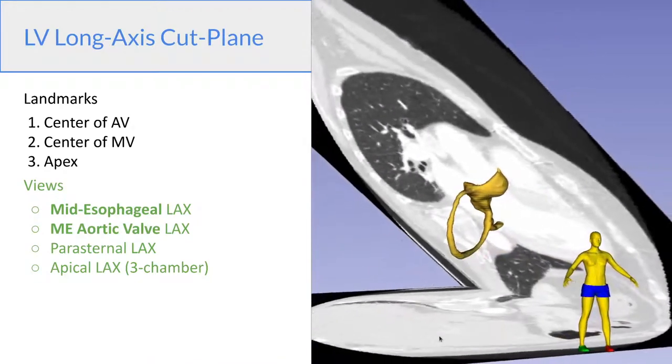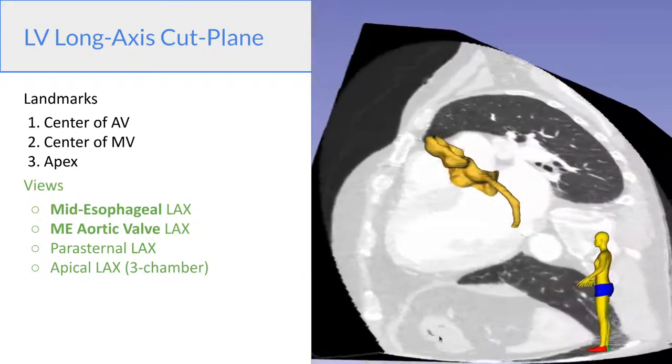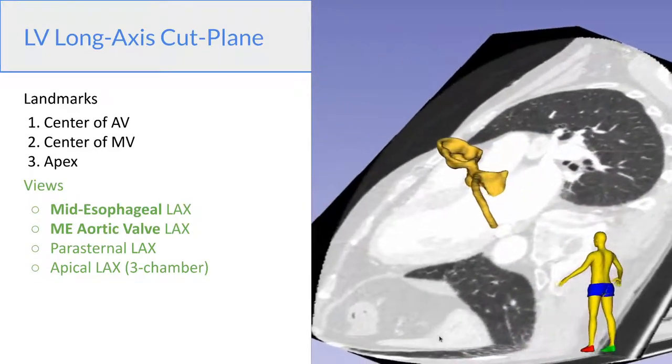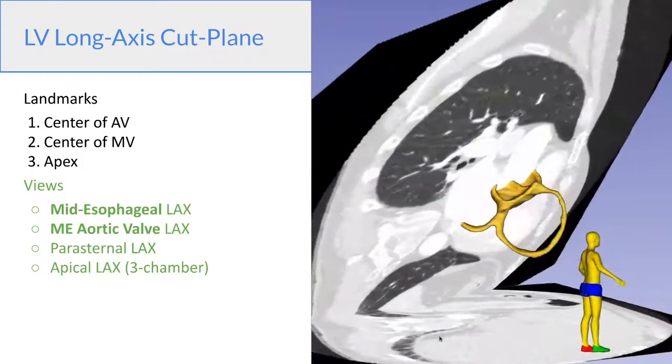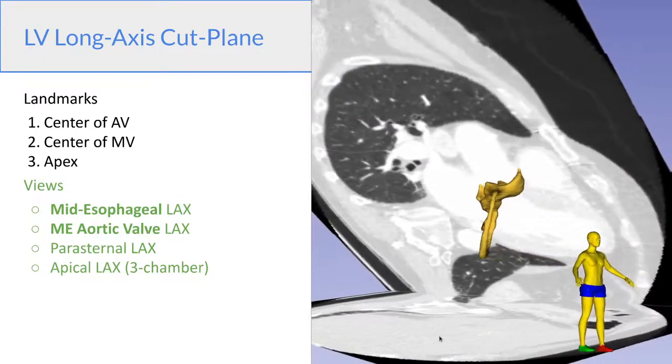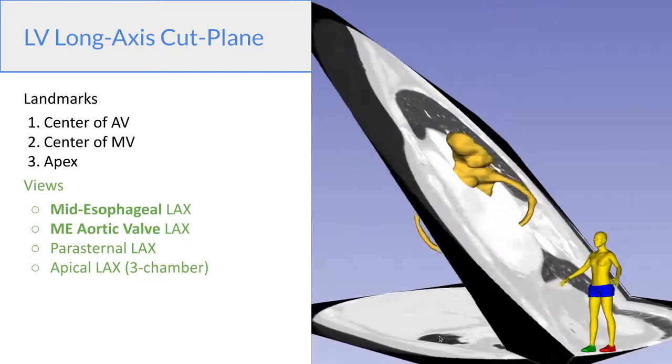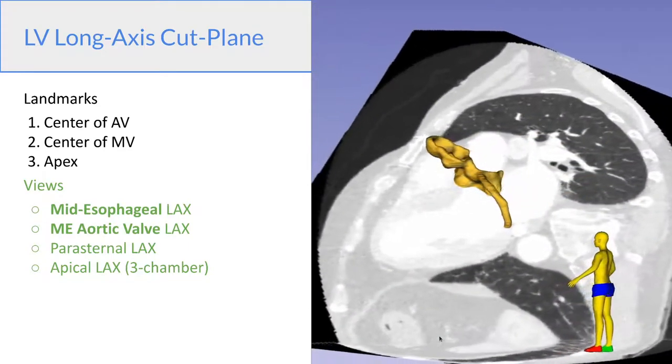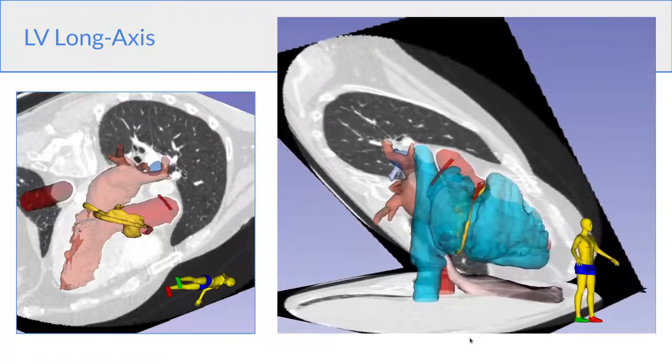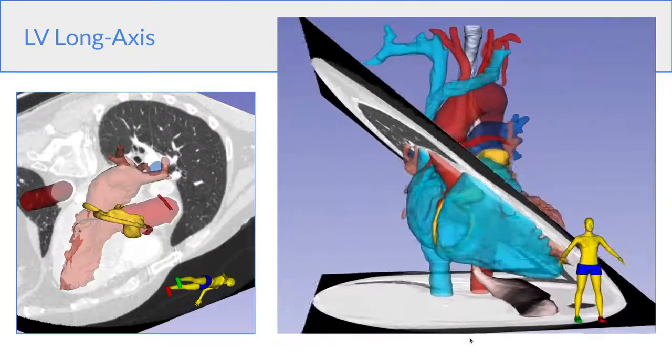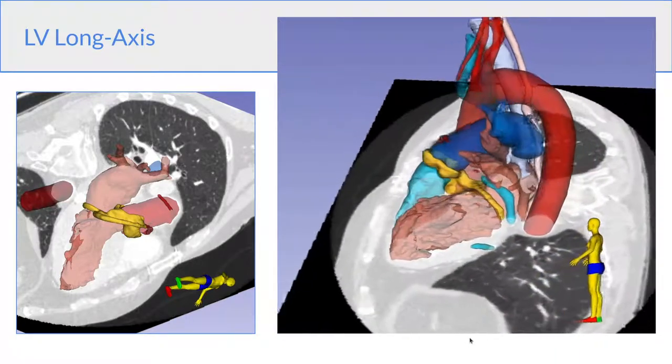The next major cut plane is the long axis cut plane, and the landmarks for which, as we discussed, are the center of the aortic valve, center of the mitral valve, and the apex. We can view this from the mid-esophagus, where we have the mid-esophageal long axis view, and the mid-esophageal aortic valve long axis view, which is essentially a zoomed in version of the same. And now we're showing all the structures again, and on the left, an on-FAST view that corresponds to our mid-esophageal long axis view.